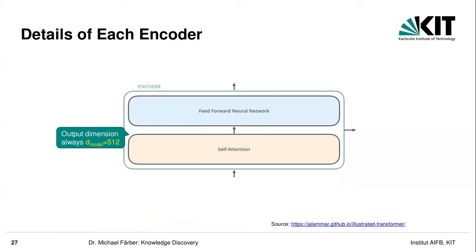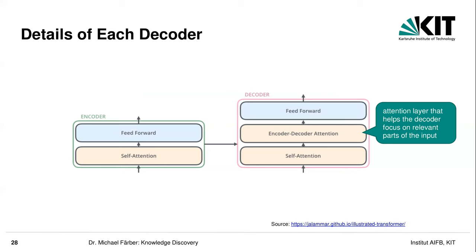The encoder consists of two main parts: the self-attention layer, which is the new part, and then a feed-forward neural network, which is quite old-fashioned — nothing really new there. The dimension of the model is typically 512, as mentioned in the paper. The decoder is responsible for producing the output and therefore not only contains self-attention and the feed-forward neural network, but also an encoder-decoder attention layer — an attention layer that helps the decoder focus on the relevant parts of the input.